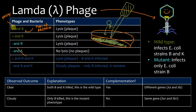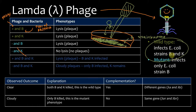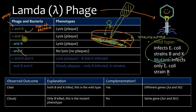So in this one, we're going to put the wild type phage in, and these cells are going to be B strain bacteria. We should know that wild type infects both E. coli strains B and K, whereas the mutant phage only infects E. coli of strain B. So what happens if you infect B strain bacteria with a wild type phage? The phenotype is going to be lysis because the phage will infect and kill all of them.